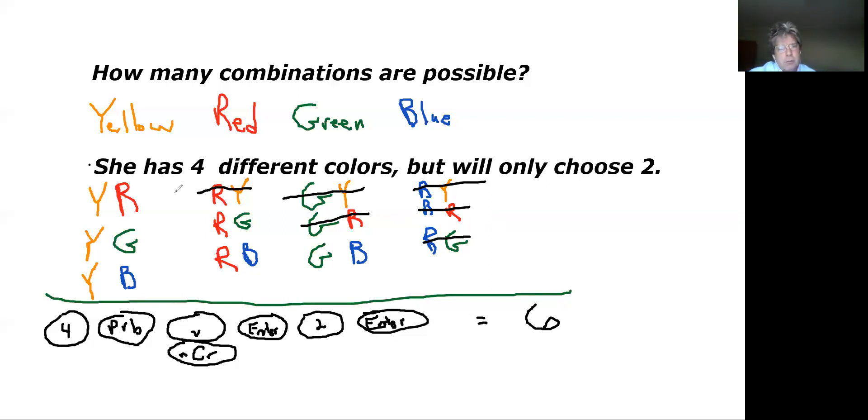So her choices would be yellow and red, yellow and green, yellow and blue, red and green, red and blue, and green and blue. Those would be her choices, so it would be like one, two, three, four, five, six choices. That's what they're trying to model back there using a chart.